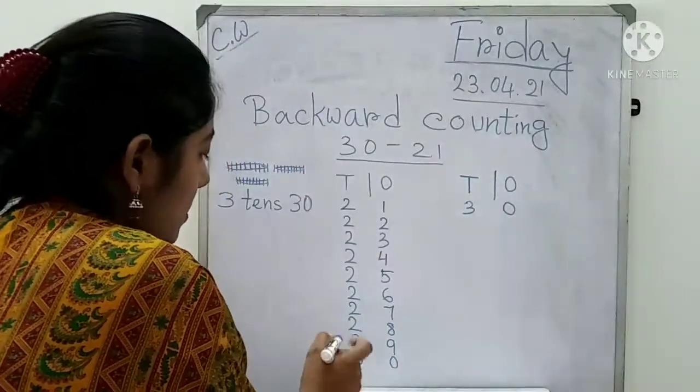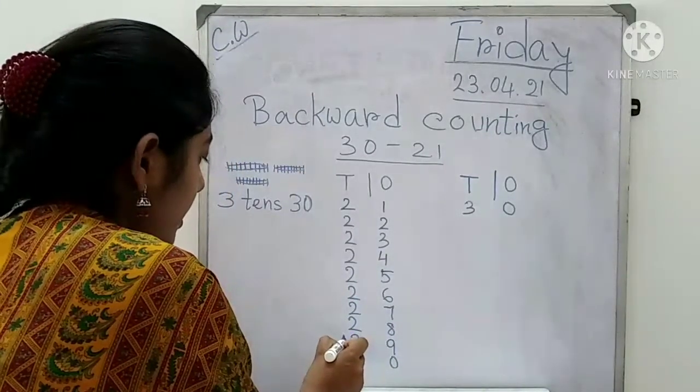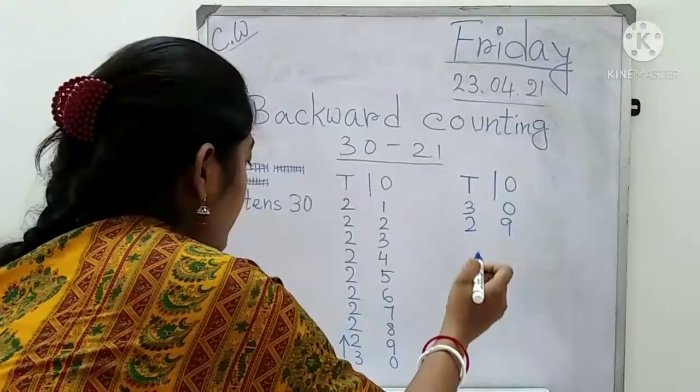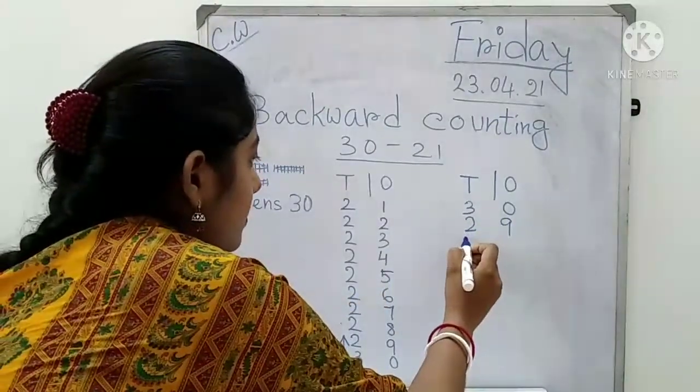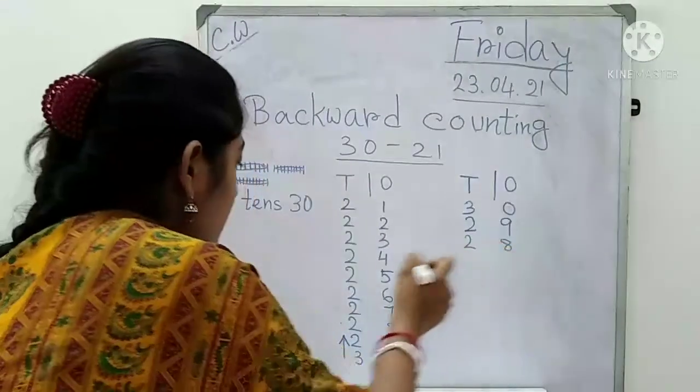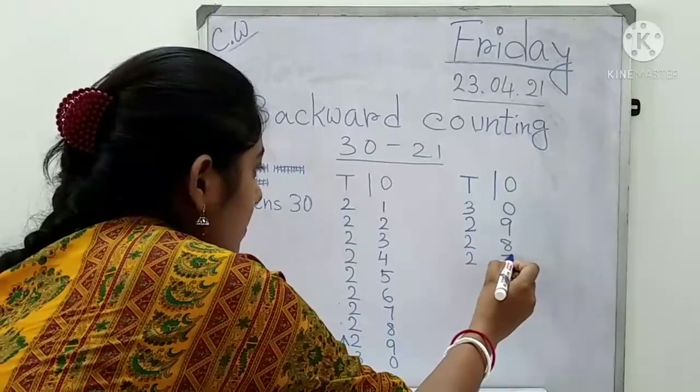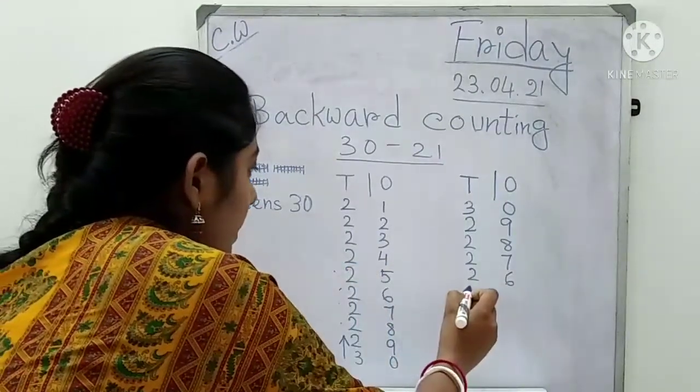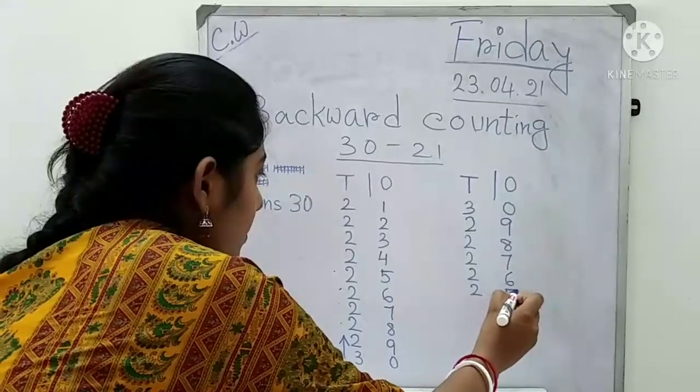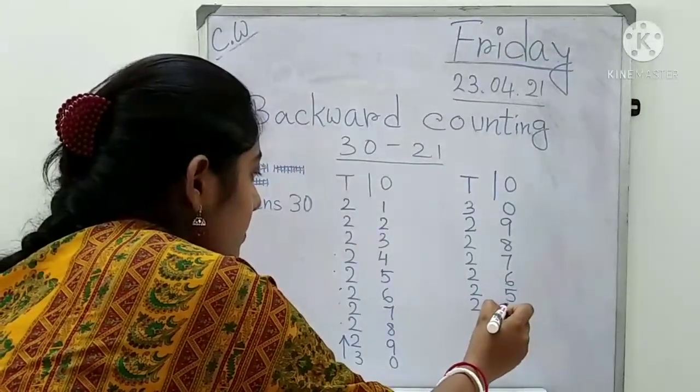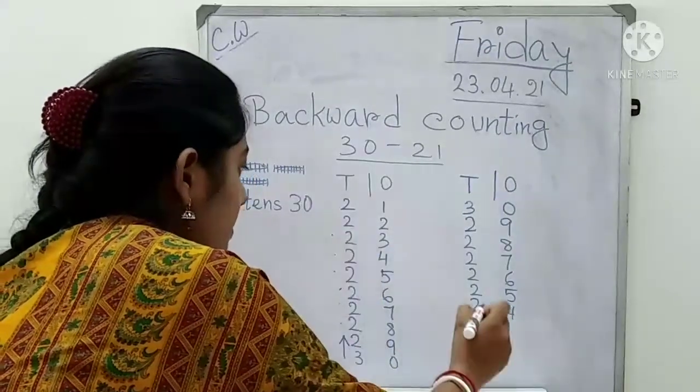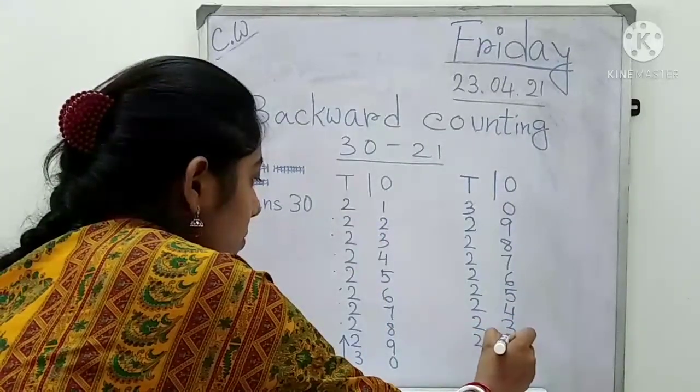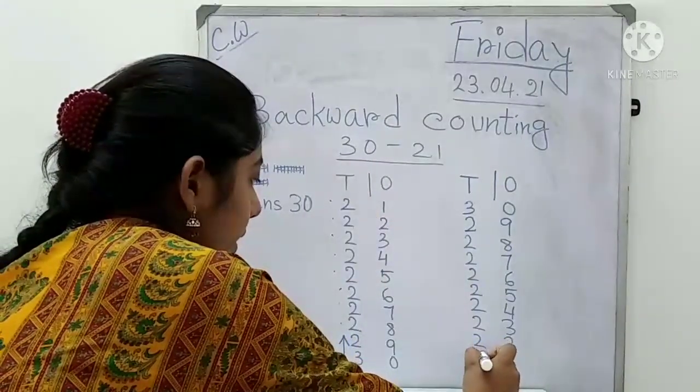Then after 30 we will write 29. Everyone say loudly. 29, 28, 27, 26, 25, 24, 23, 22, and 21.